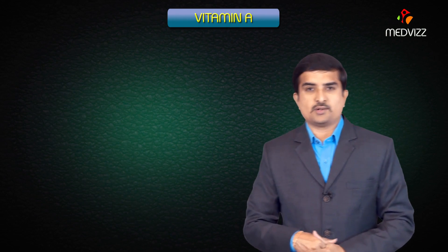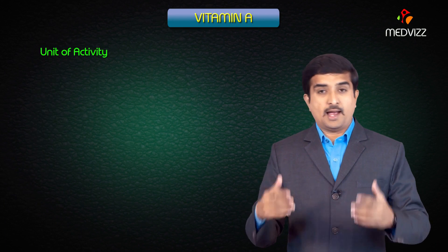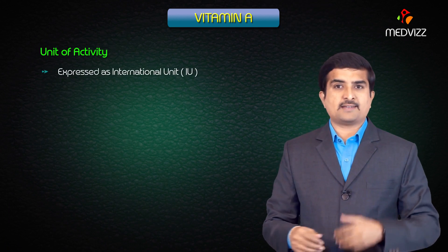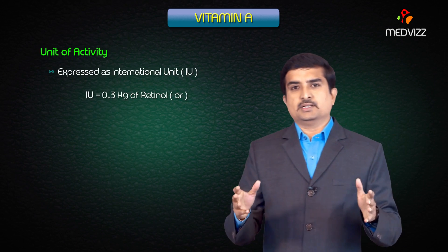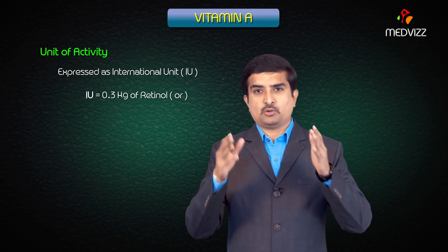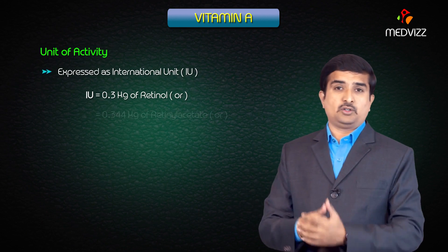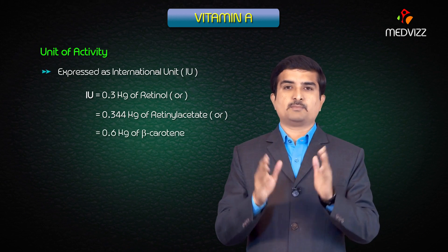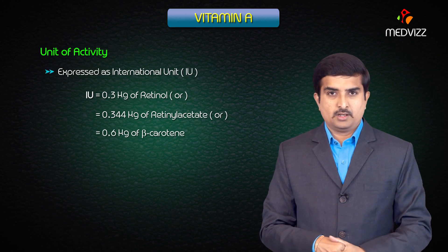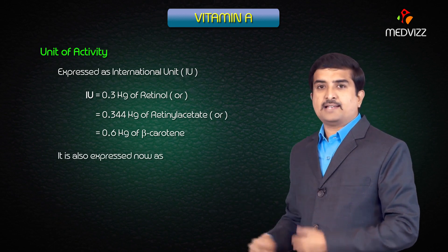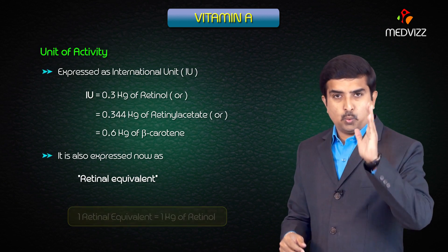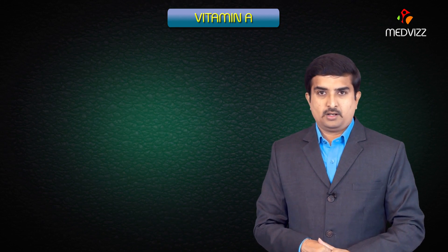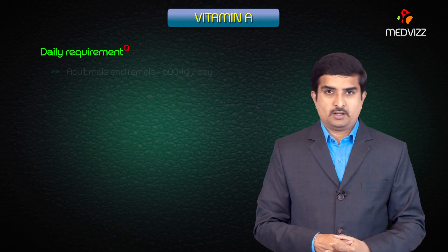The unit of activity for vitamin A is expressed as International Units (IU). One IU is equal to 0.3 micrograms of retinol, which equals 0.344 micrograms of retinol acetate, or 0.6 micrograms of beta-carotene. Activity is also expressed as retinol equivalent, where 1 retinol equivalent equals 1 microgram of retinol.